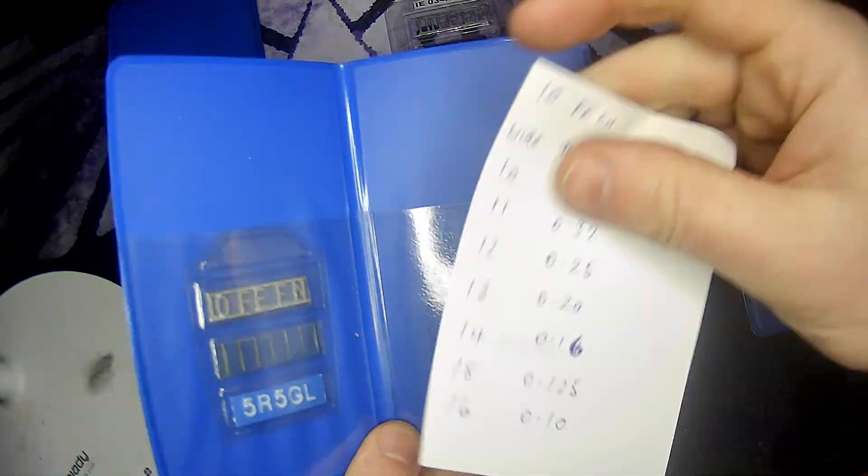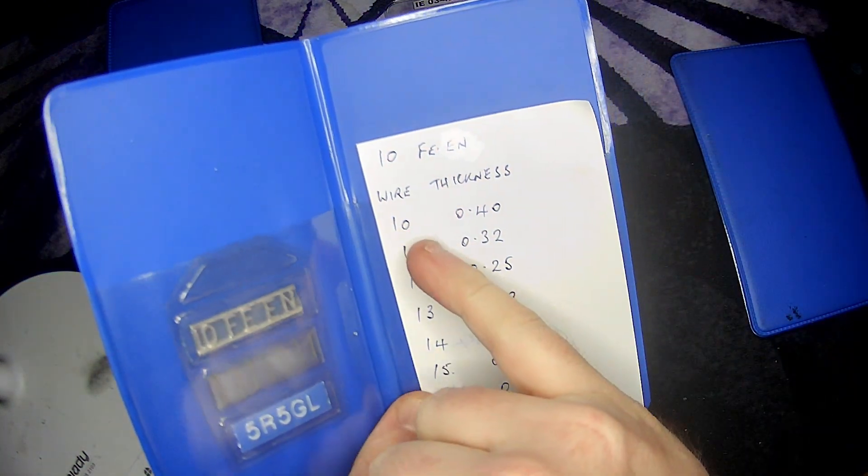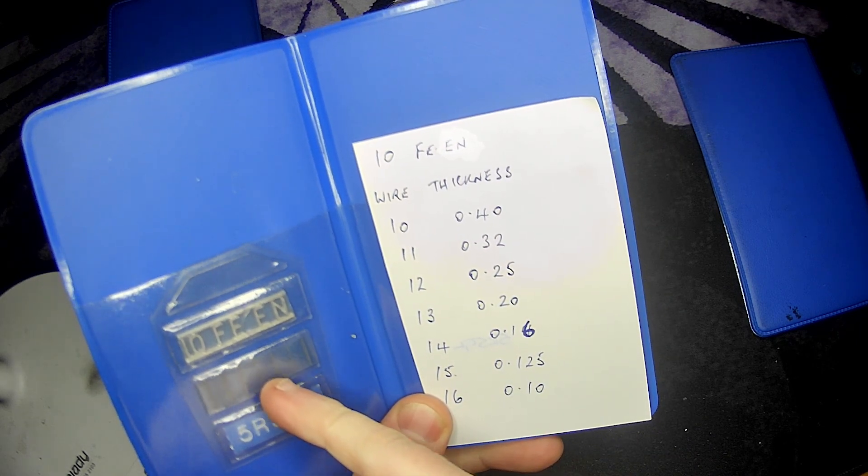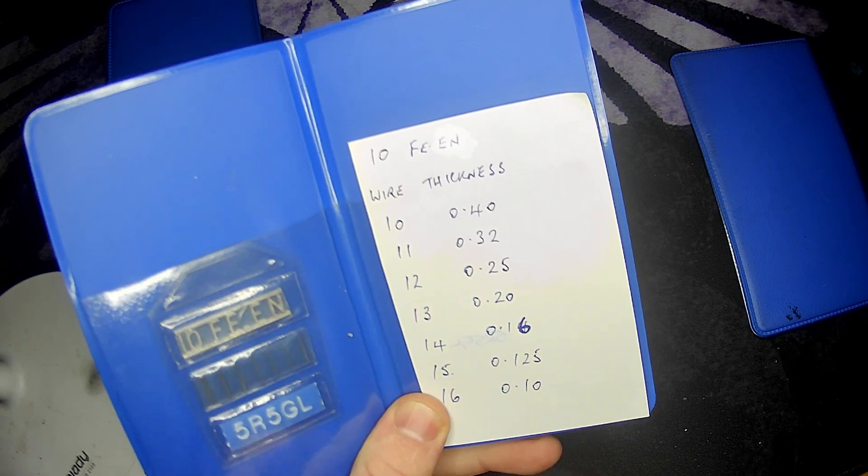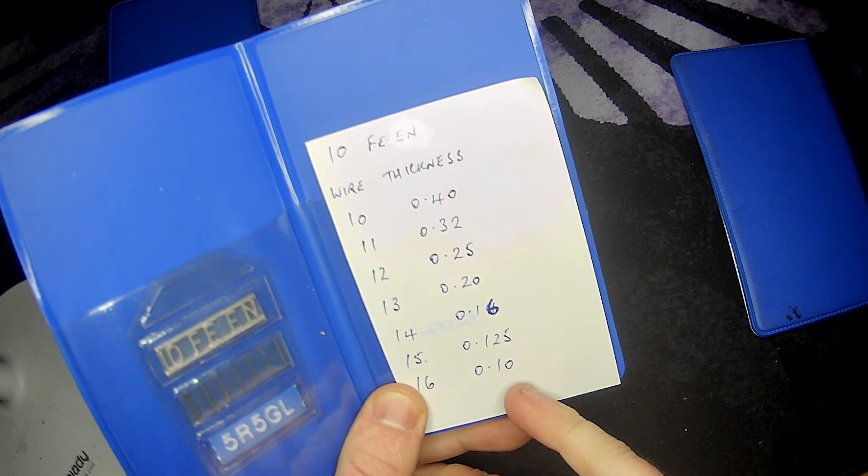On the back of this one, you'll see that we've got just for every wire size, so the 10, 11, 12, 13, 14, 15 and 16, we've written the thickness of each of those wires down.